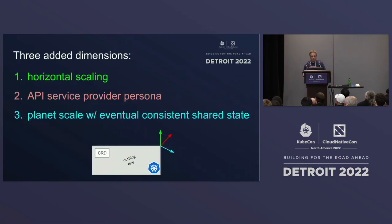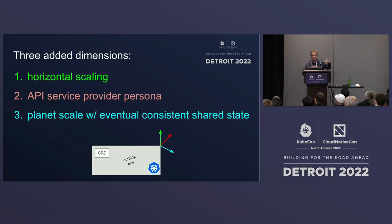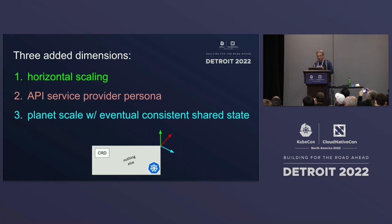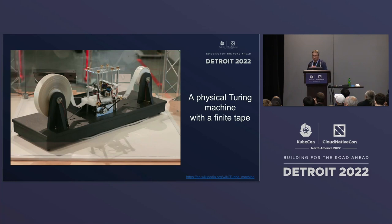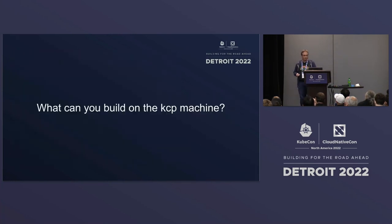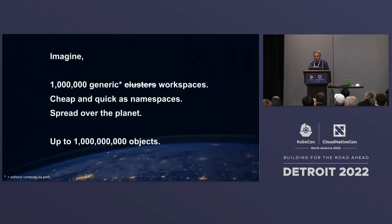So we have three dimensions: horizontal scaling; API service-provider personas — controllers which are multi-workspace-aware, giving you the service-provider persona in the system; and planet scale, distributed over the planet. The question is: think of a compute model — what can you build with such a construction? That's the challenge. Imagine you have one million generic workspaces, cheap and quick as namespaces, spread over the planet in milliseconds. If you do the math: a thousand objects per workspace gives you a billion objects.